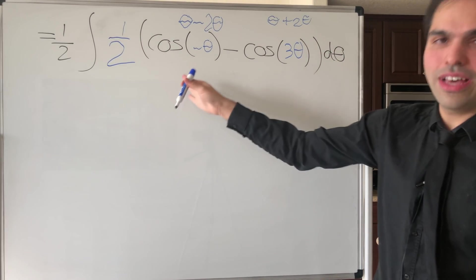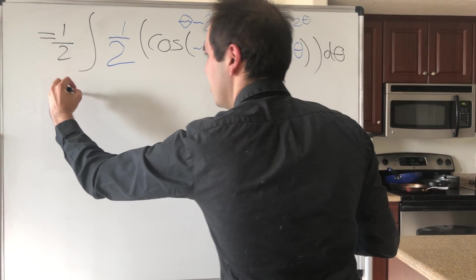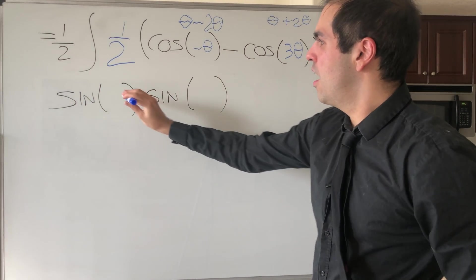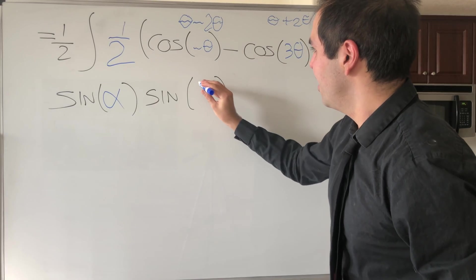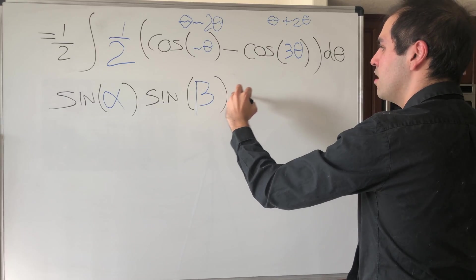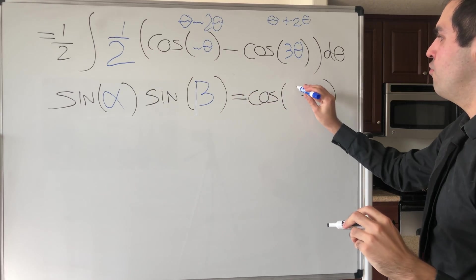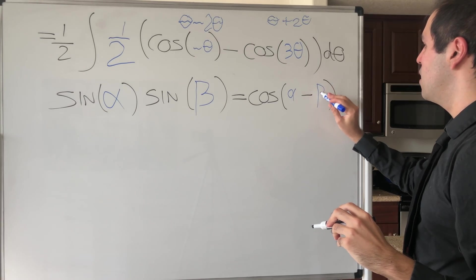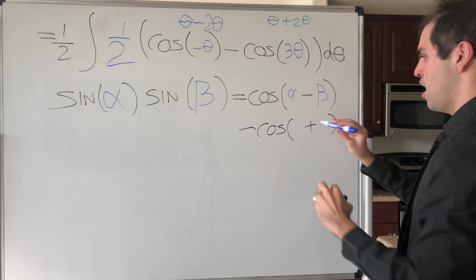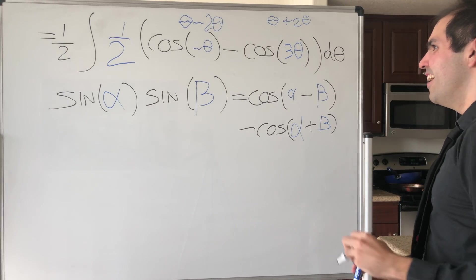So just to emphasize here, I use that sine of alpha times sine of beta becomes cosine of, I think, alpha minus beta, minus cosine of alpha plus beta.